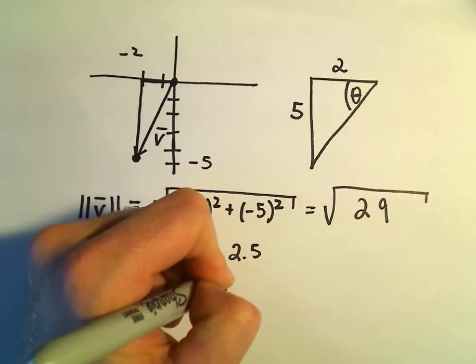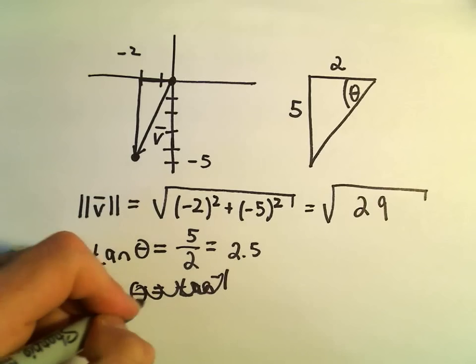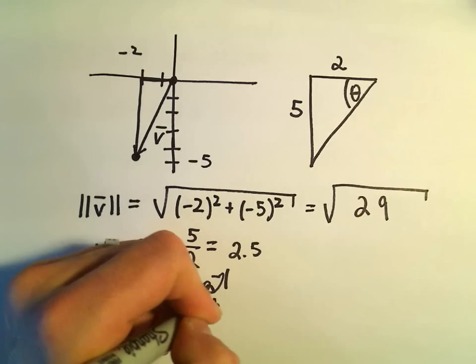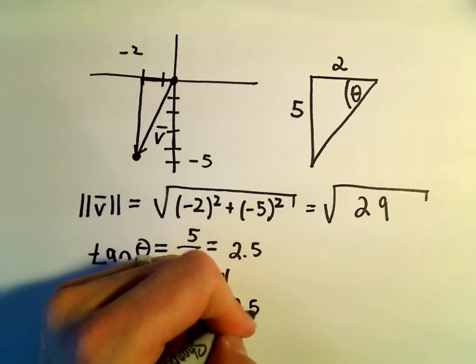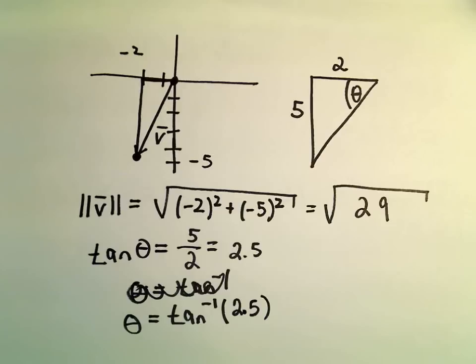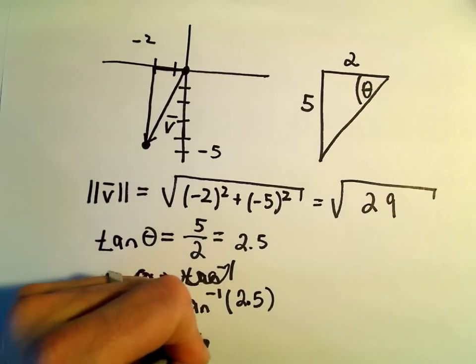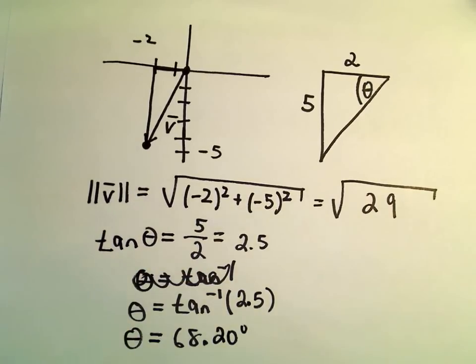Inverse tangent of 2.5, that's going to give us our angle theta. When I do inverse tangent of 2.5, I get theta to equal 68.20 degrees.